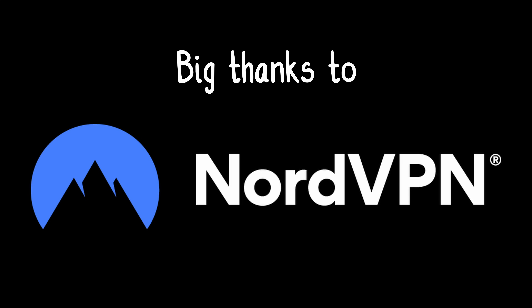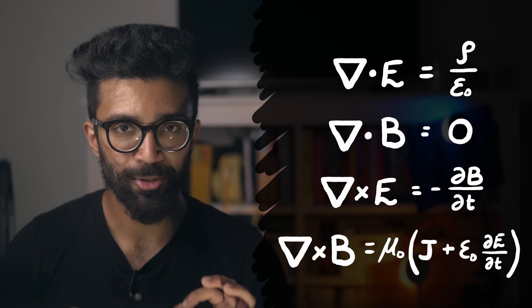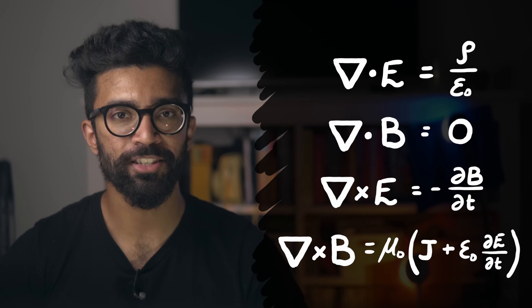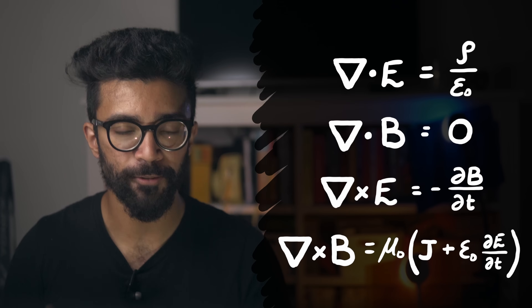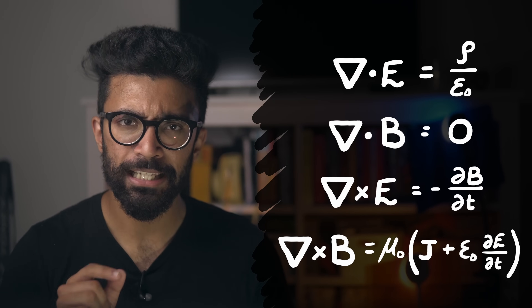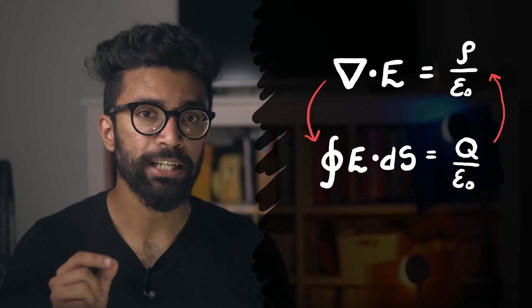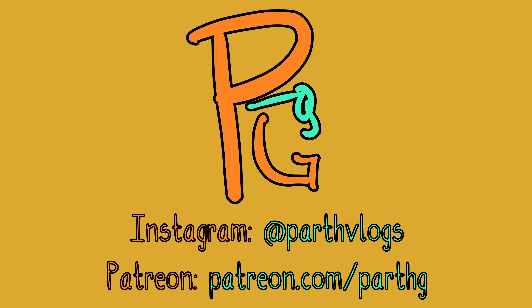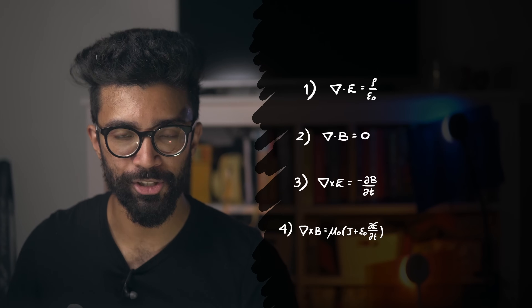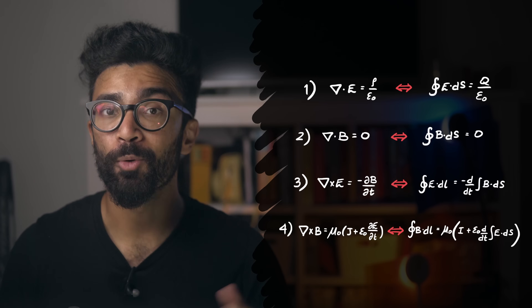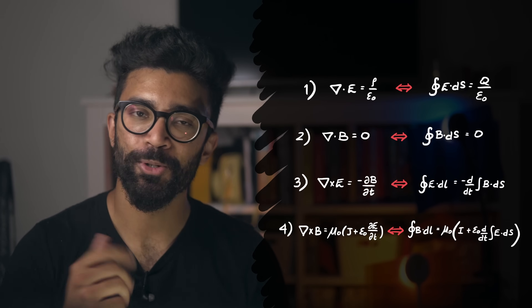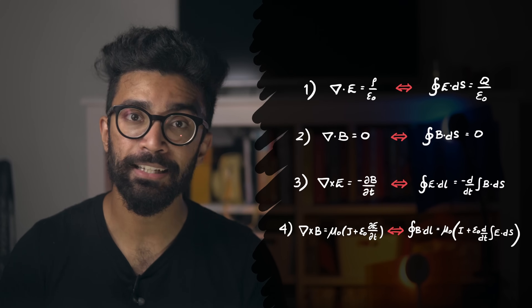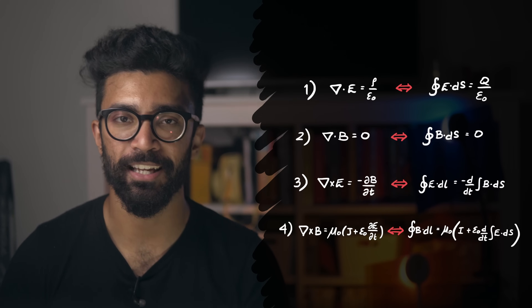Huge thanks to NordVPN for sponsoring this video. Maxwell's equations of electromagnetism are used to describe how electric and magnetic fields behave in our universe. But did you know that there are at least two ways in which each of these can be written? Hey there, my name's Parth, and in this video we'll be looking at why every Maxwell equation can be written in two different ways, and what each one of them actually means. So if you enjoy this video then please hit the thumbs up button, subscribe, and hit the bell button for more fun physics content. Let's get into it.